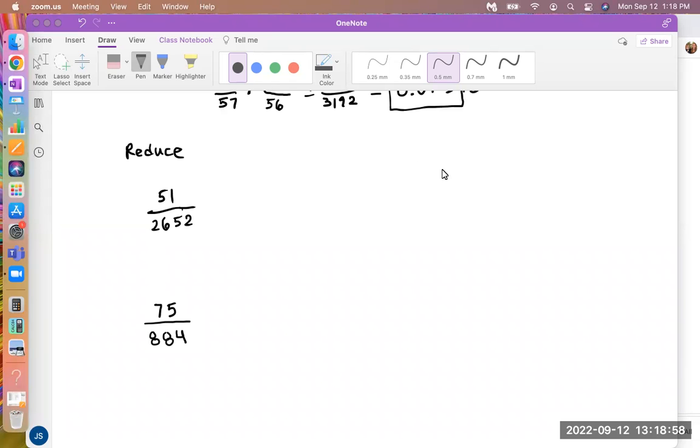Just to let you know, reducing a fraction means to divide the numerator, the number on the top, and the denominator by the same number. And it has to be a number that divides both into the numerator equally and into the denominator equally, with no remainder.